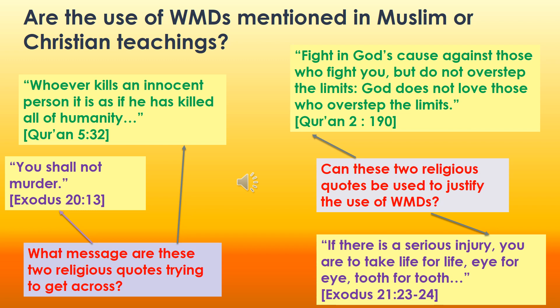Here are two other verses from the same holy books that some people might say could be used to justify the use of WMDs — it would be difficult, but they might. From the Quran: 'Fight in God's cause against those who fight you, but do not overstep the limits. God does not love those who overstep the limits.' And from the Bible, Exodus: 'If there is a serious injury, you are to take life for life, eye for eye, tooth for tooth.' Copy down one quote from a holy book that is clearly against the use of WMDs, and one that maybe could be argued in favor — noting the source or religion, and if you can, write an explanation of how it could be argued to support WMDs.